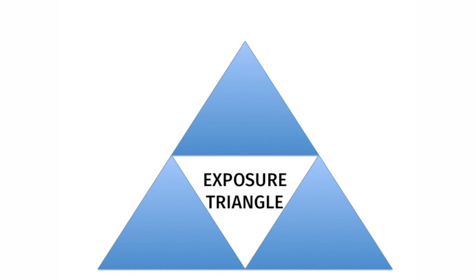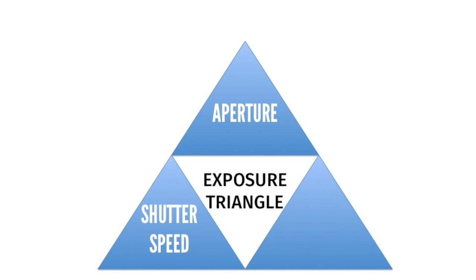The exposure triangle is made up of aperture, shutter speed, and ISO. Today we're going to talk exclusively about aperture — define what it is and give you some examples of what it does for you and your photographs.